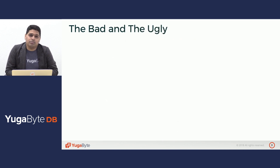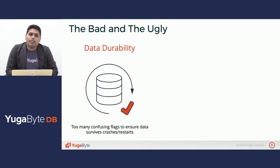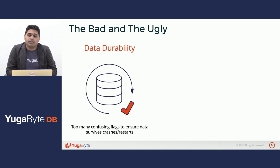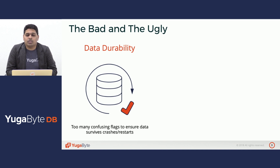However, there are some bad and some ugly parts to MongoDB. The bad part is about data durability. Over the years MongoDB has struggled to ensure that the data that you are persisting into the database is actually going to survive crashes and restarts. There have been too many confusing flags which have tripped both developers and operations engineers in order to ensure that MongoDB is a resilient, durable data store.